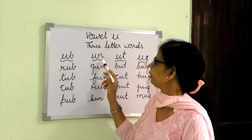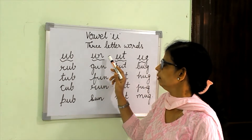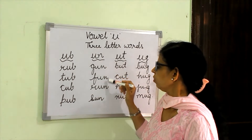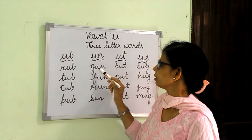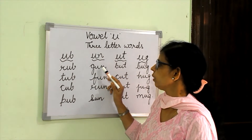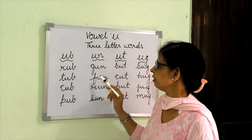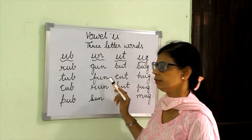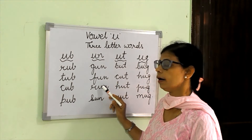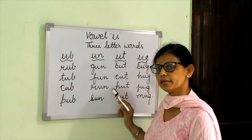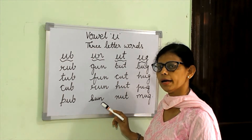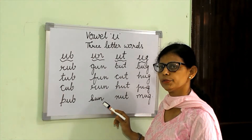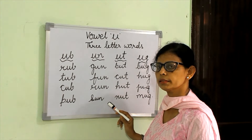Here is the ending sound UN. Now form words: G, U, N — gun. F, U, N — fun. R, U, N — run. And the last one: S, U, N — sun.